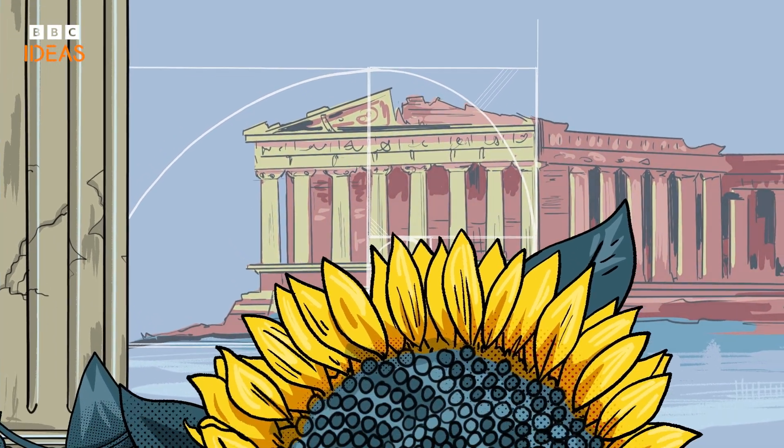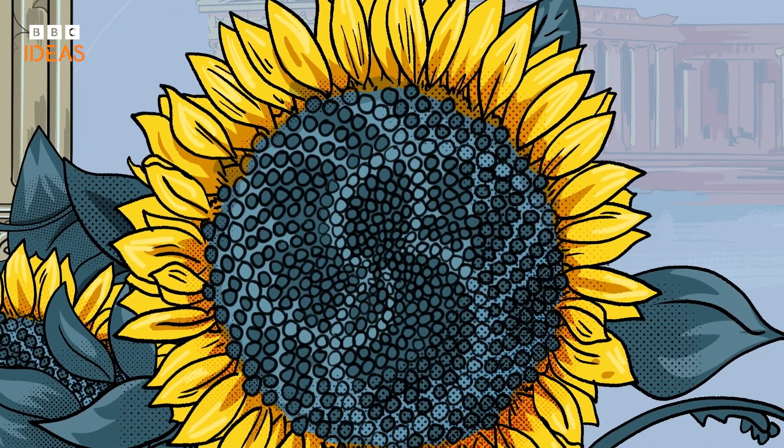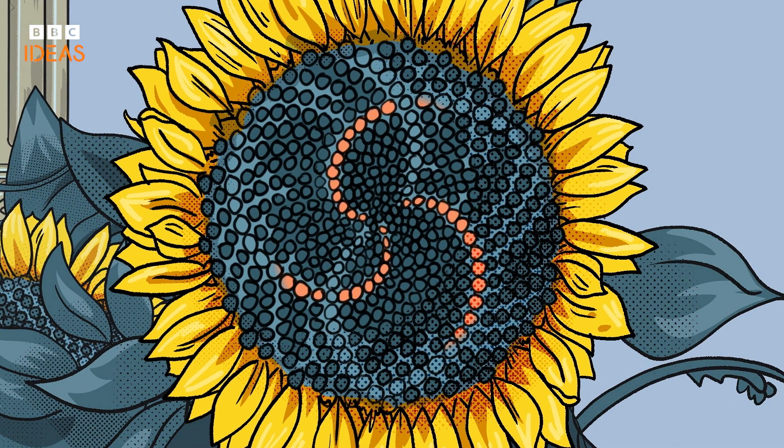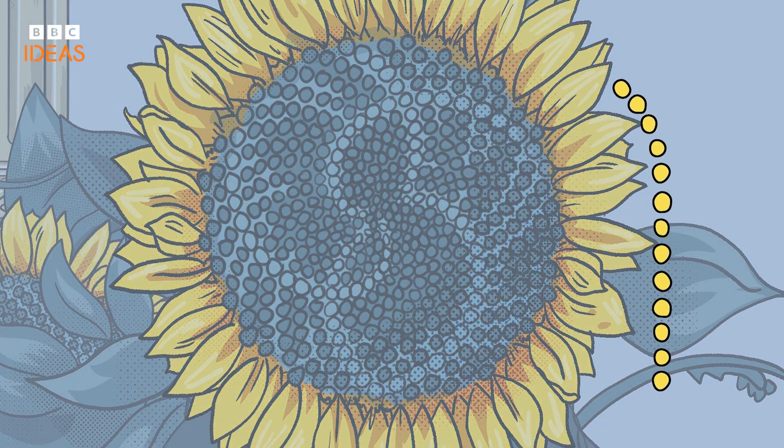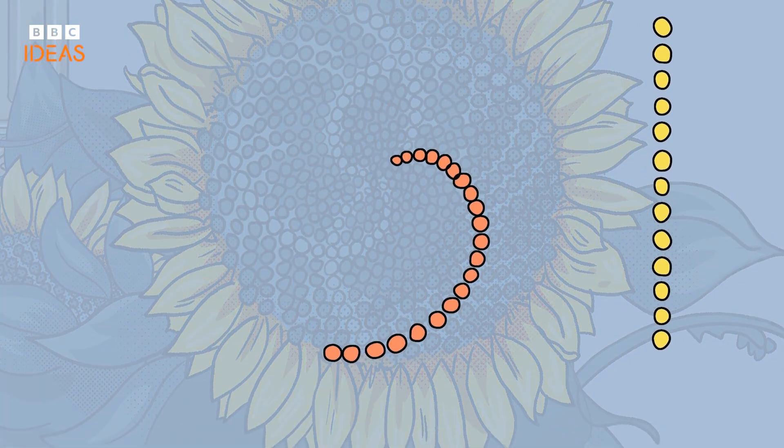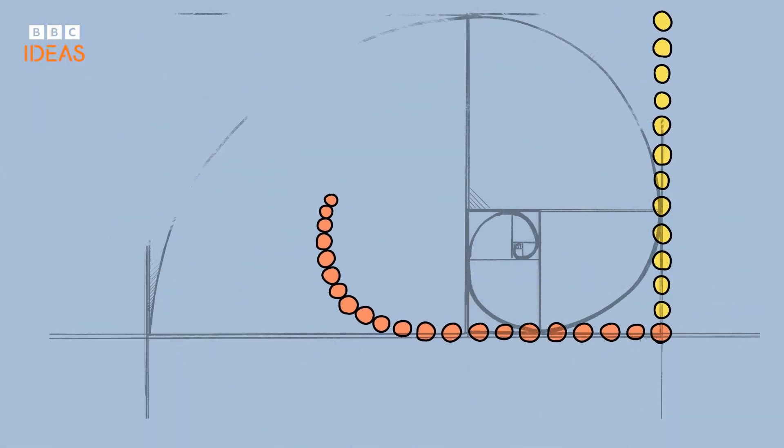And you don't have to look far to see the golden ratio all around us. In a head of sunflower seeds, there are two sets of interlocking spirals. If you count all the spirals going one way, you get one Fibonacci number. And if you count all the spirals going the other way, you'll get the next Fibonacci number.